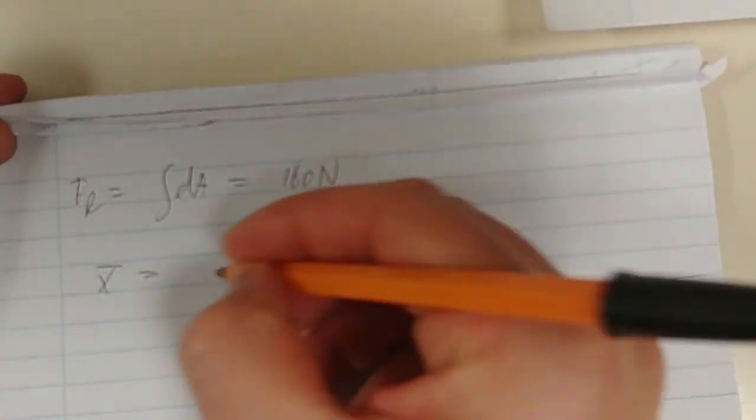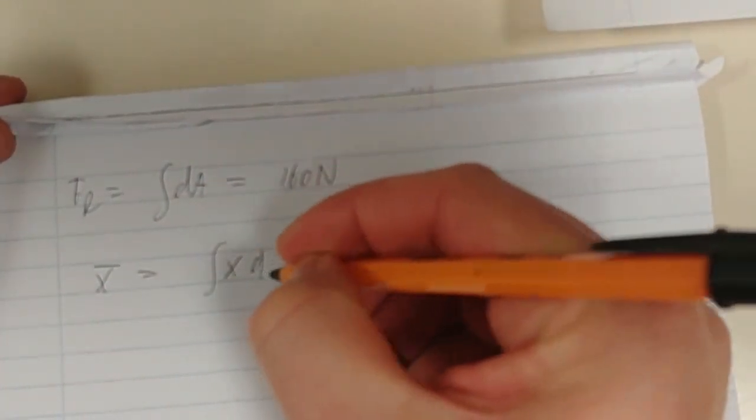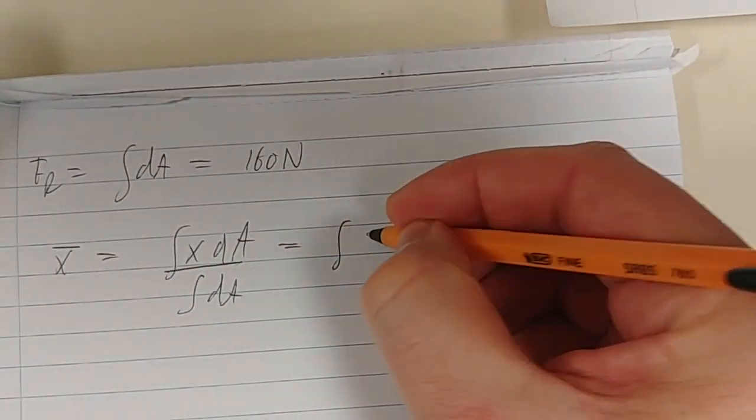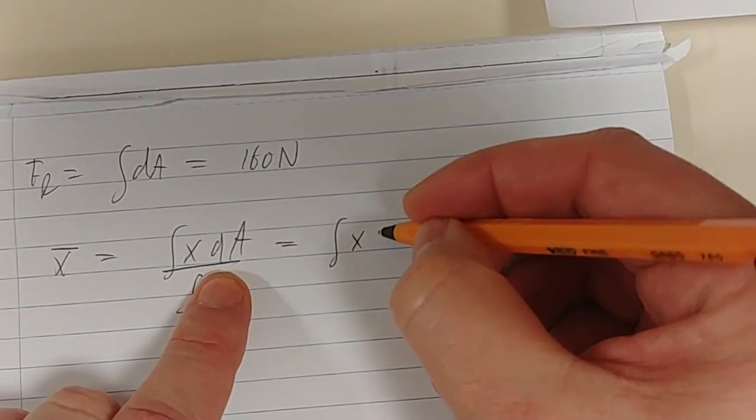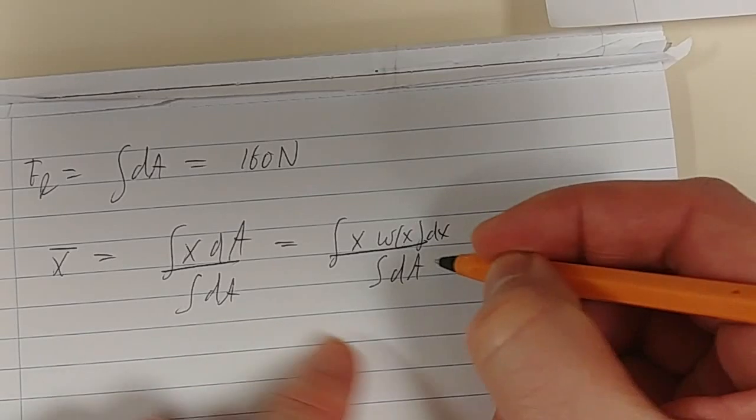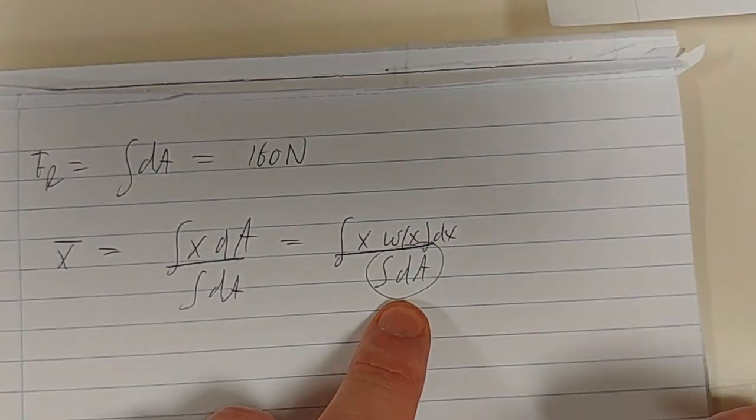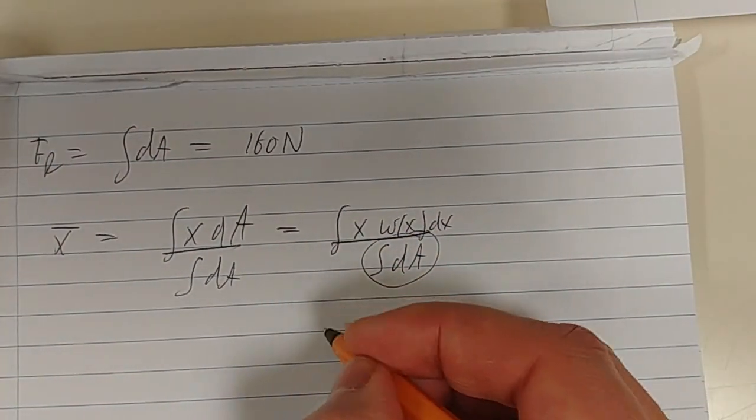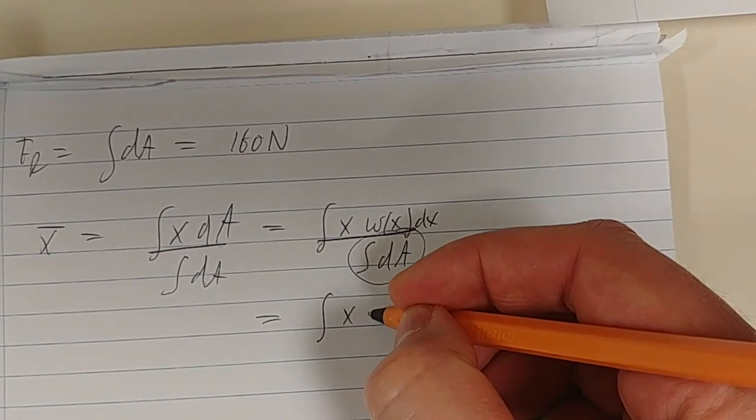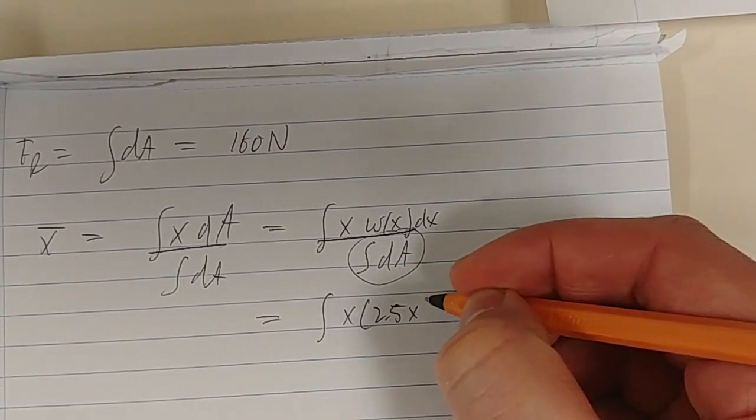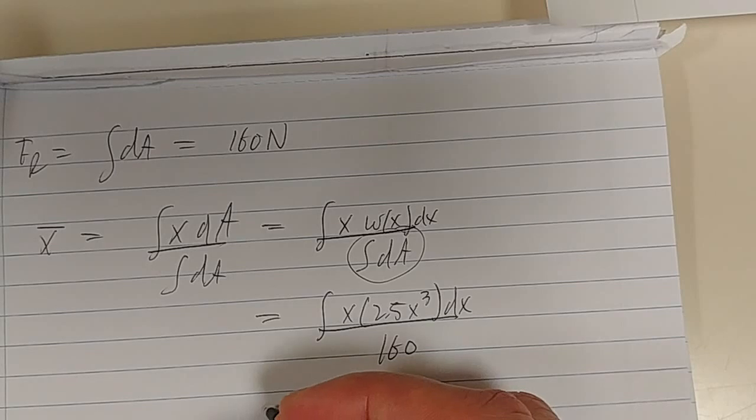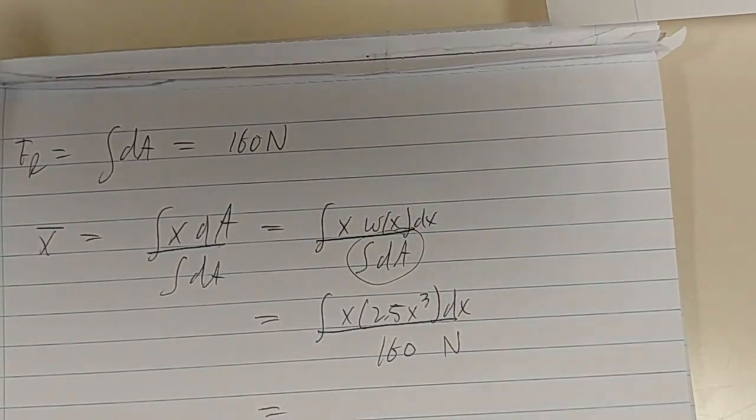FR is the integral of dA and that was equal to 160 Newtons. Now x̄ is equal to ∫x dA over ∫dA, which is then equal to ∫x·W(x)dx over ∫dA. But we've already calculated this to be 160 Newtons. So let's look at the top: we've got x times 2.5x³dx and at the bottom we've simply got 160.